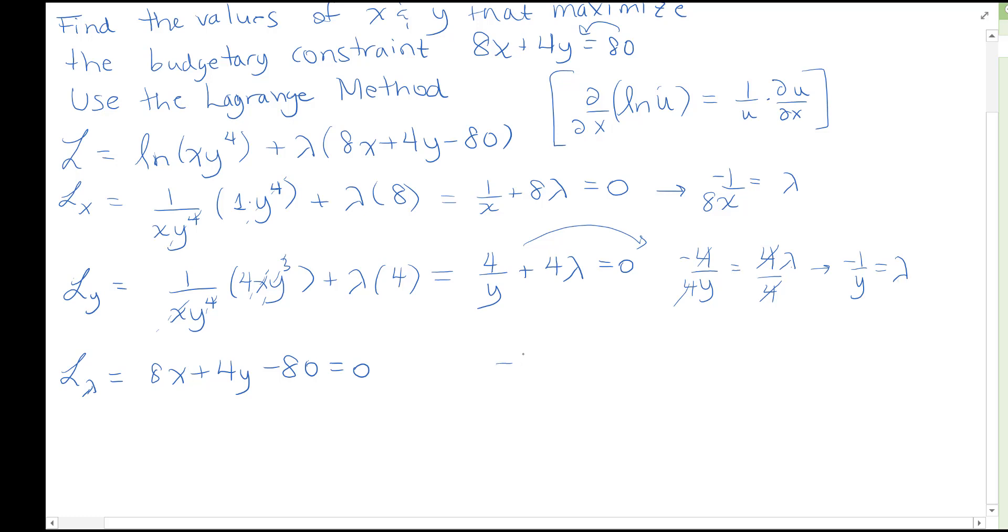So I now have negative 1 over 8x equals lambda and I have negative 1 over y equals lambda. So I get a relationship between x and y.